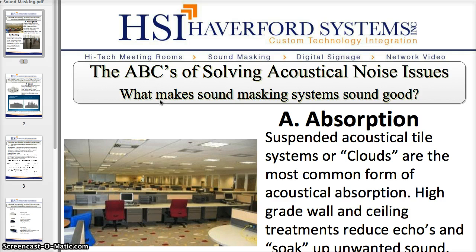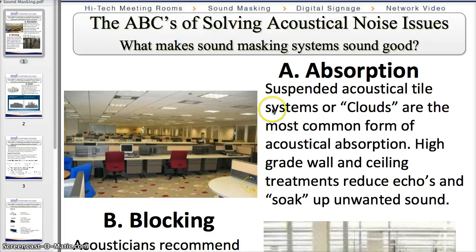The first of the ABCs is Absorption. Absorption is the power to absorb sound, reduce echoes, reduce noise, and remove unwanted sound. The most common form is suspended ceiling tiles, also known as clouds by architects. If you have a lot of echoes in your office, putting in an acoustical ceiling tile is the first step to absorbing that noise and beginning to increase speech privacy levels.